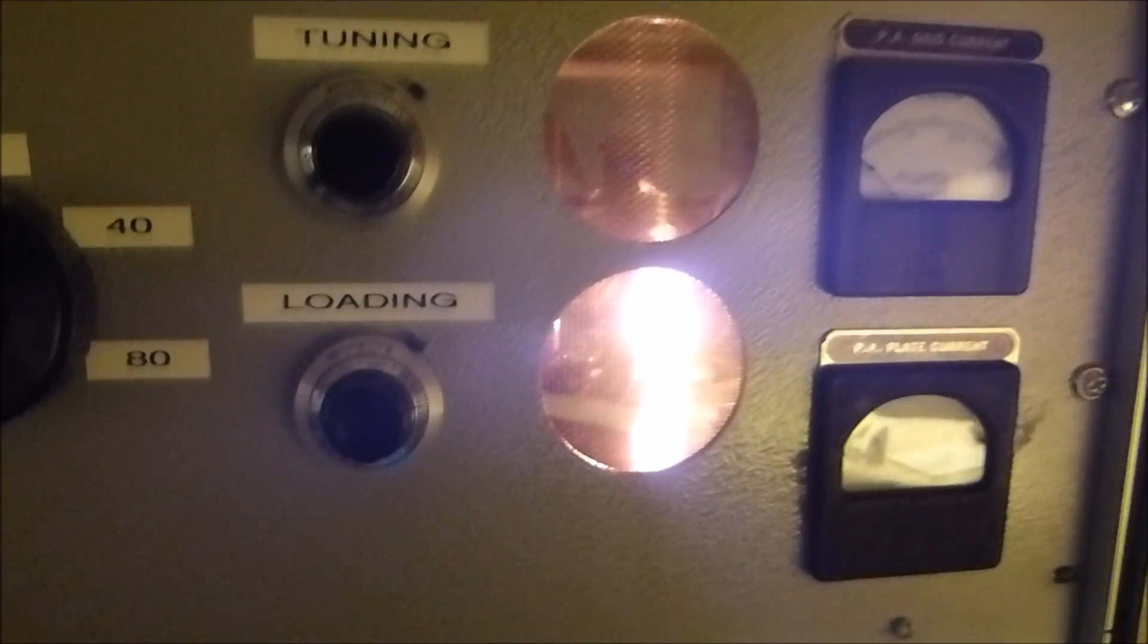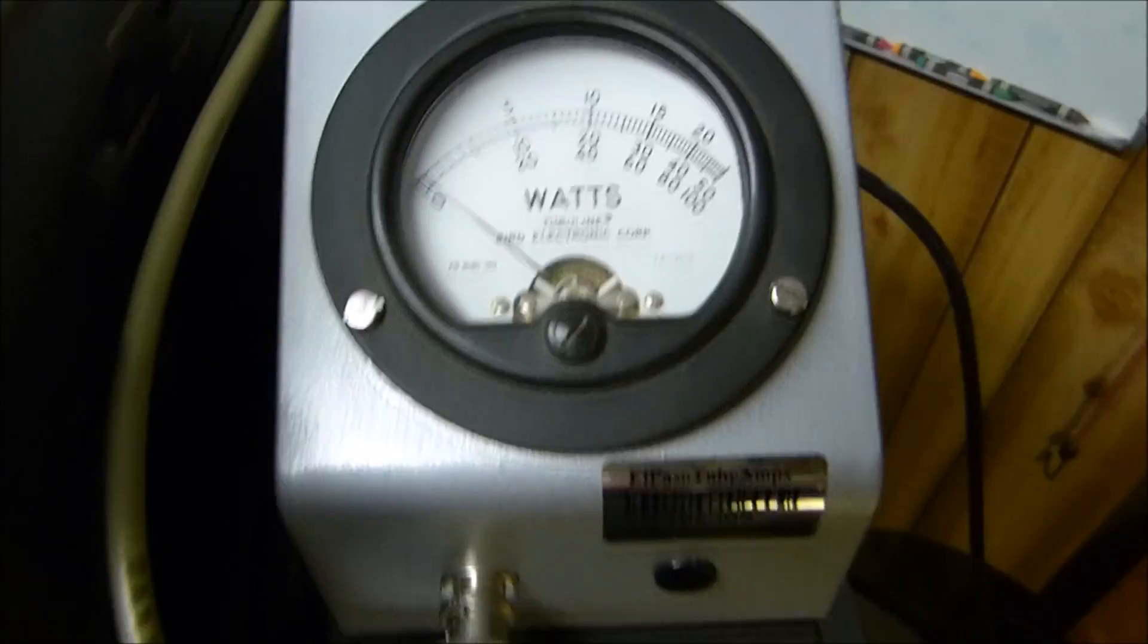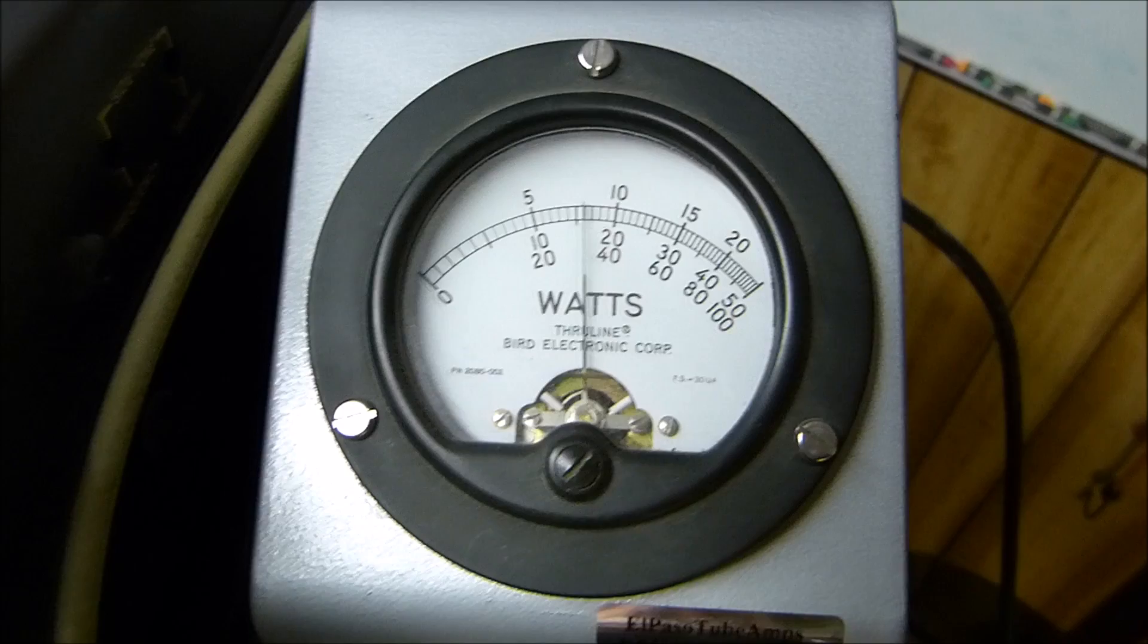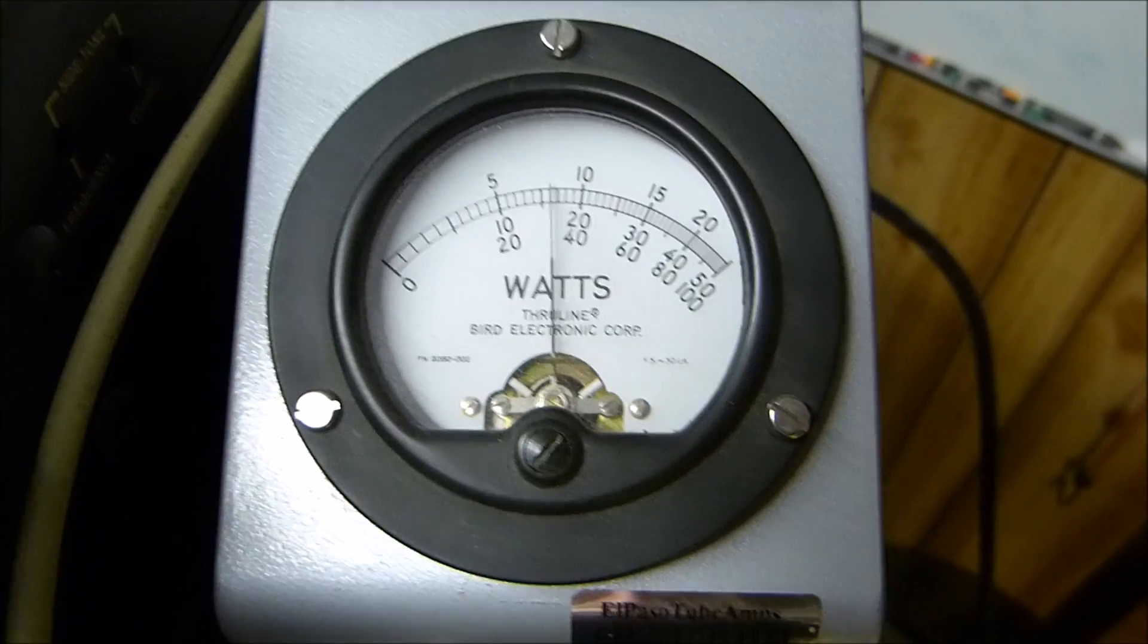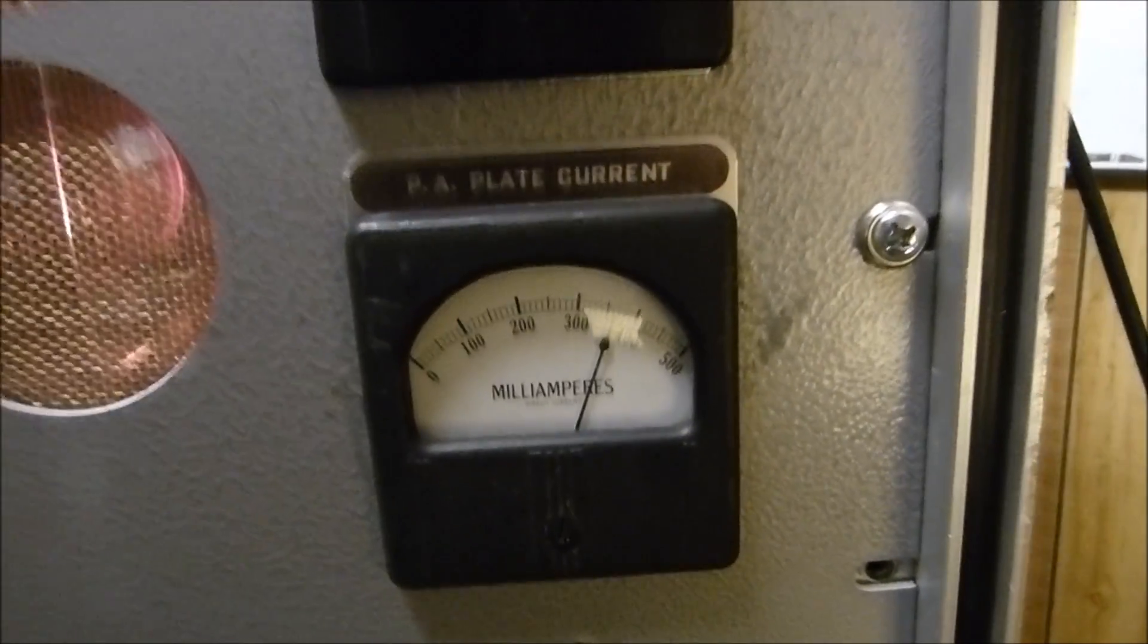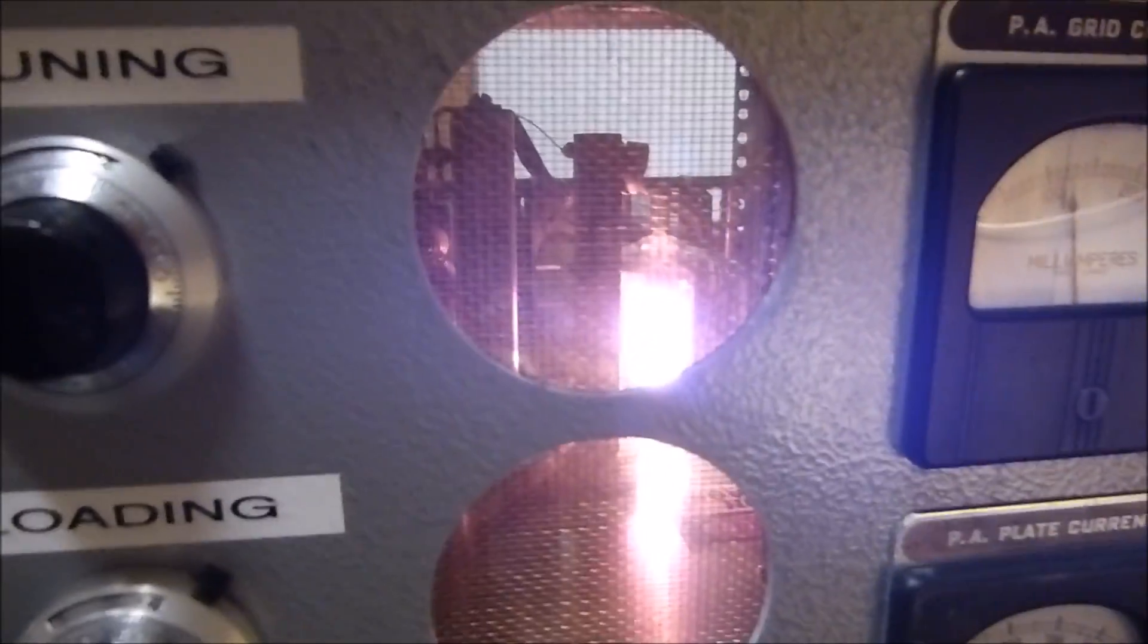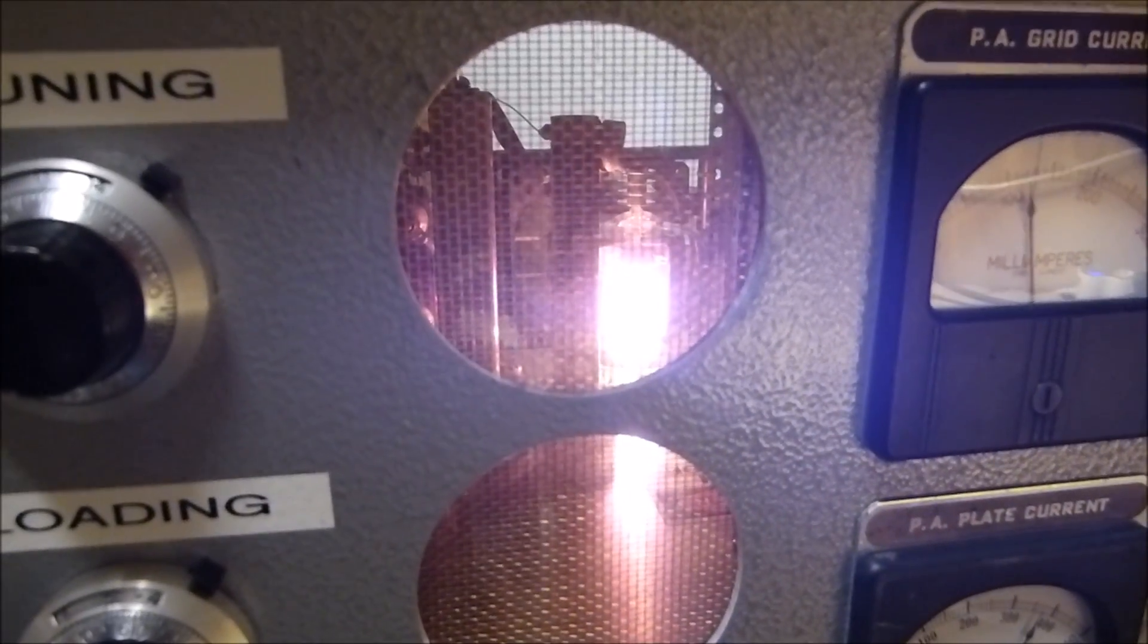And without doing anything else besides just touching the tuning, which really hardly was required at all, there's the 3-400Z in there. Again, the camera is always so overwhelming, I really wish that could show you. But anyway, into a dummy load of course, key down, here's the power: 800 watts, less grid current, about the same plate current, a bit less grid current, and the tube does not show any more red in the plate.